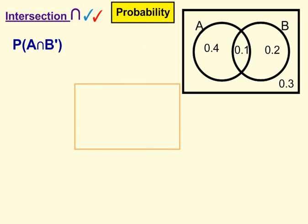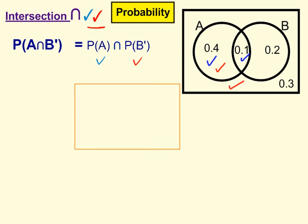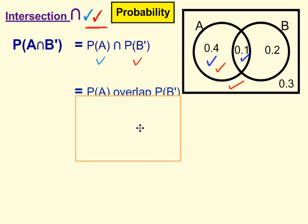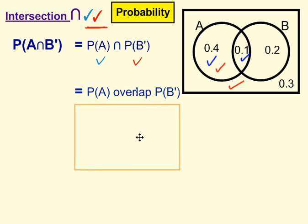Second example: probability of A intersection probability of not B. The first thing, we're going to break it apart and tick in the appropriate areas. So first of all, we're going to tick where A is — that's inside the A circle. And now it's the probability of not B, so in red we're going to tick all the regions that don't contain B — that region and that region there. We're looking for our two ticks, and we can see that 0.4 is the only region that contains two ticks. So our final answer is the region where A overlaps with not B, and that's 0.4.